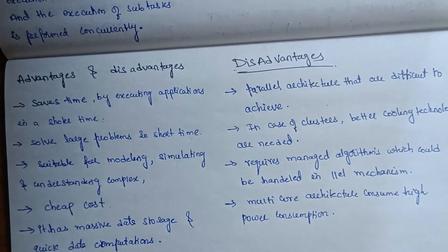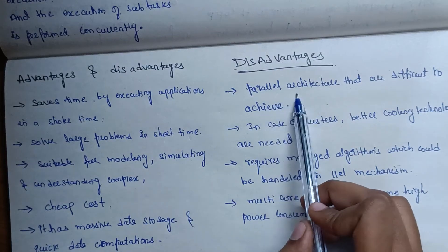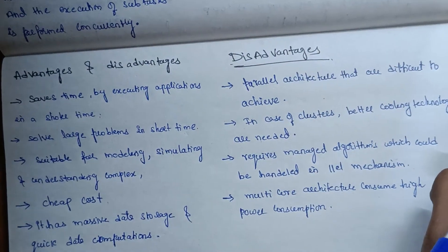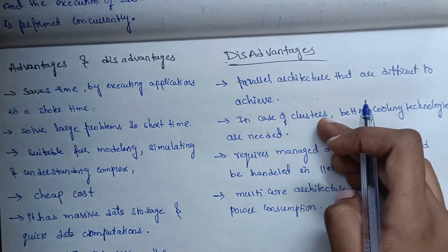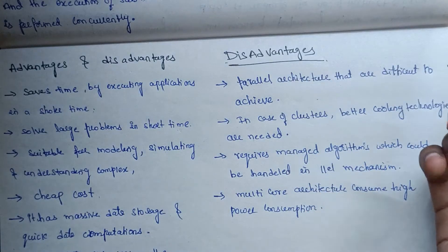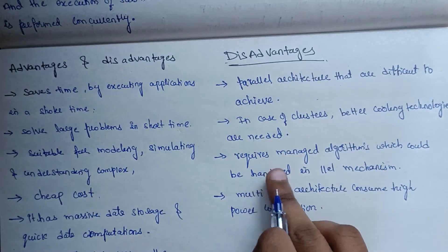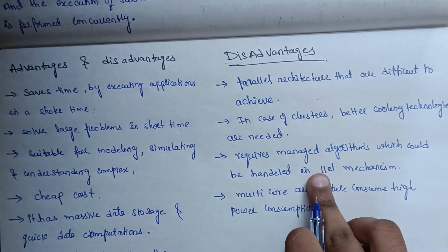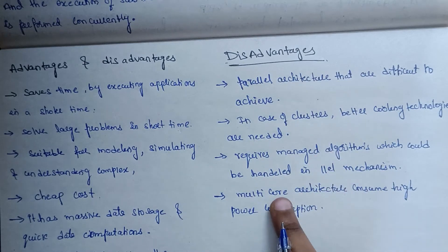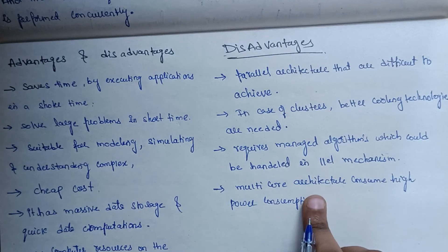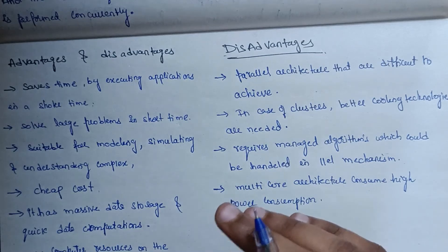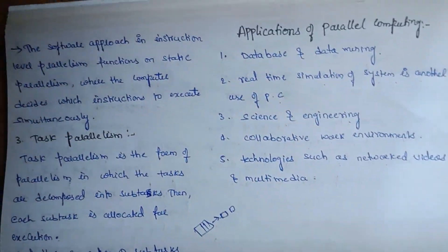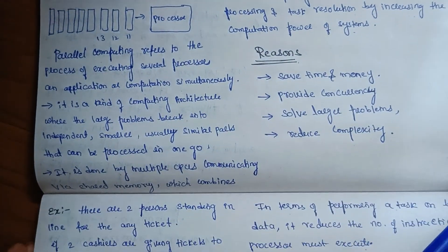Disadvantages include: parallel architecture can be difficult to achieve and the overall system may fail. In cluster computing, better cooling technologies are needed. It requires managed algorithms to handle parallel mechanisms. Multi-core architectures consume high power. This concludes the overview of parallel computing — its definition, types, applications, advantages, and disadvantages.